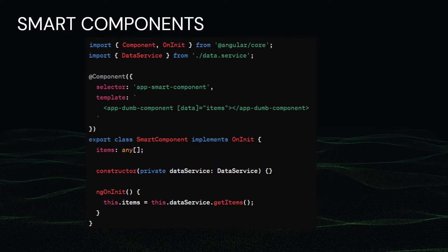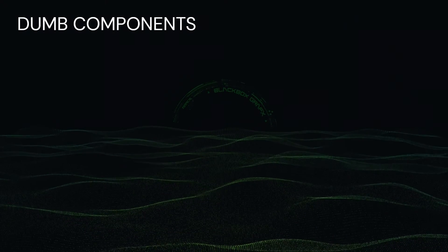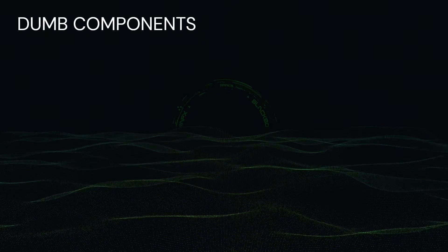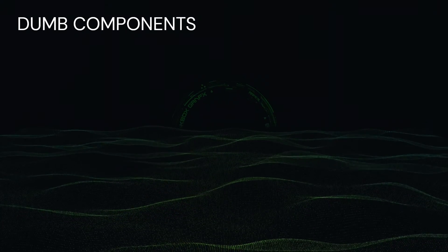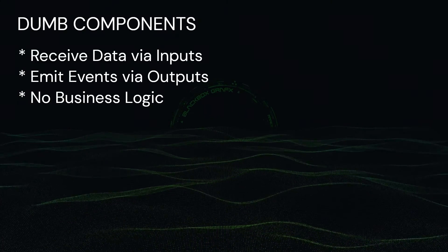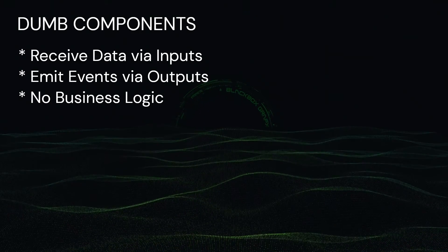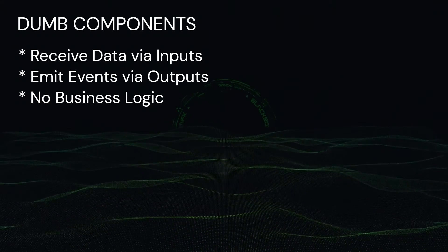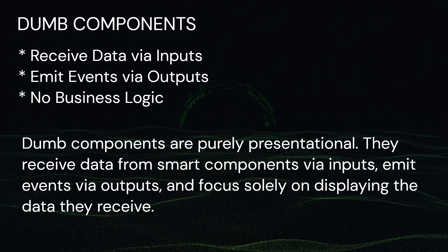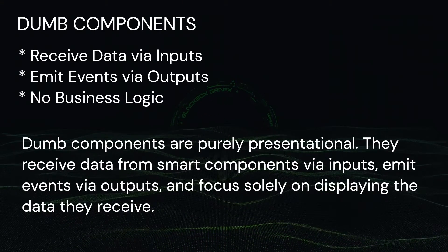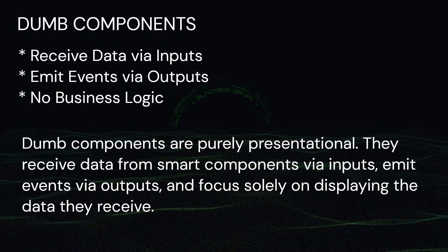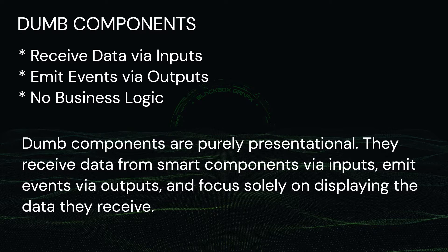Now the dumb components. Let's talk about the dumb components. What benefits do we get with dumb components? They receive data via inputs, emit events via outputs, and have no business logic. Dumb components are purely presentational. They receive data from smart components via inputs, emit events via outputs, and focus solely on displaying the data they receive. You can see the details in the example.